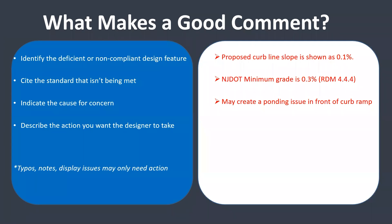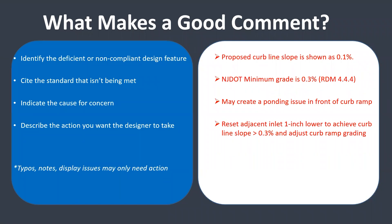The key element is describing the action that you want the designer or the LPA to take, and this should be as explicit as you can get it. For example, your idea might be to lower an adjacent inlet so that you can get above the minimum slope, and then you want the designer to also adjust the curb grading accordingly. Typos, notes, and display issues may only need that action statement — if you want a note added on a sheet, say 'add the following note.' If it's a typo, you can say 'fix spelling' or 'update project name.' For issues where a standard isn't being met, you'll definitely want to provide context.